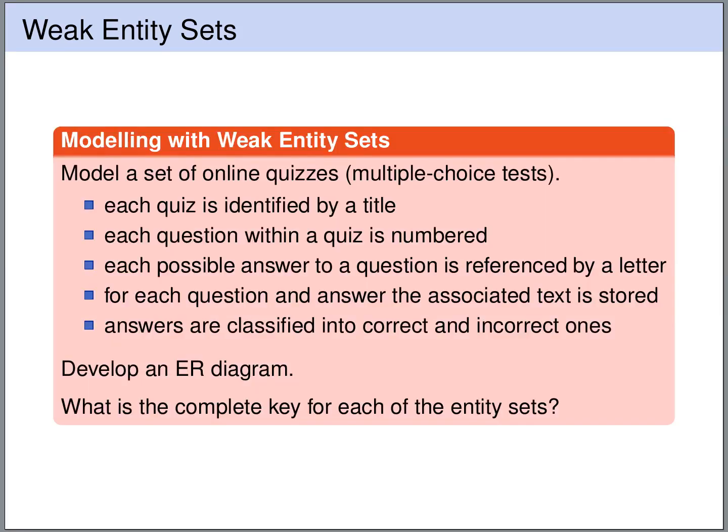So let's try whether you understand weak entities. We want to model the following scenario: some online multiple choice quizzes. Each quiz shall be identified by a title. Each question within a quiz is numbered. Each possible answer to a question is referenced by a letter. For each question and answer, the associated text is stored in the database. The answers are classified into correct and incorrect ones. We should develop an entity relationship model and determine the primary key for each entity set and weak entity set.